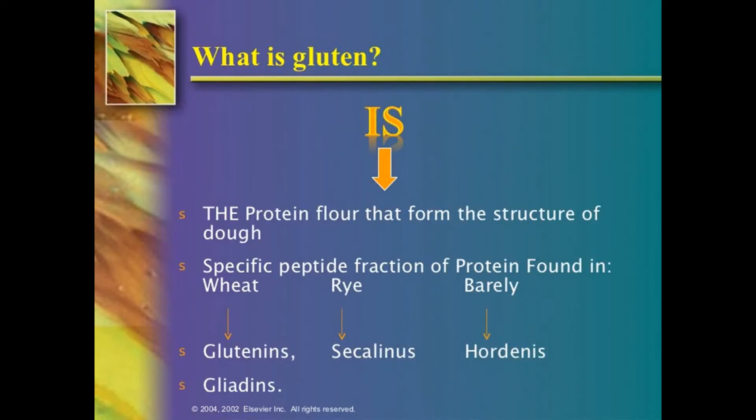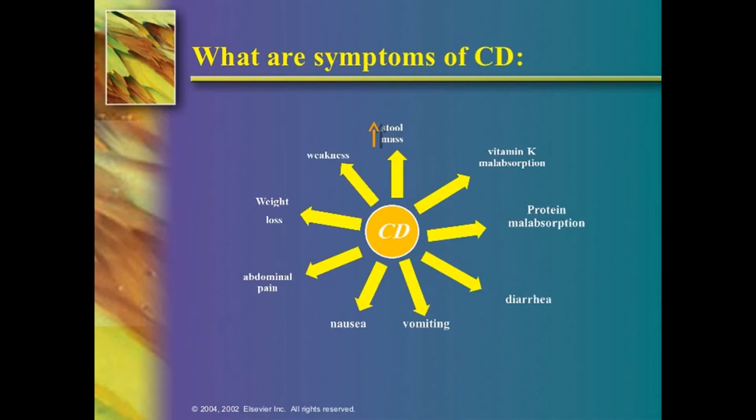The specific peptide fractions of the protein found in wheat are glutenins and gliadins. In rye it is the secalins, and in barley it is the hordeins. These are the culprit subfractions of the proteins against which autoantibodies are formed. When you take these things, antibody-antigen reaction occurs and destruction occurs in the small intestine.